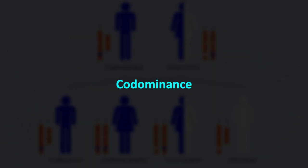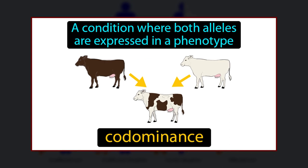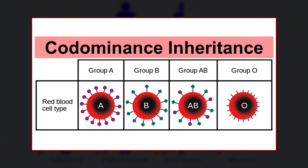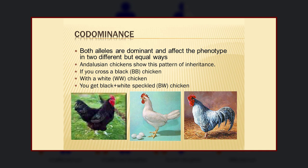Now, codominance. In an offspring of an organism, if we see traits from two alleles, then it is a result of codominance. Blood group in humans is a good example: someone with blood group AB expresses the alleles of both blood groups A and B, meaning both antigen A and B are present on the RBC membrane. Another example of codominance is in varieties of domestic fowl or chicken, where black and white feathers are codominant, and when fowls of both separate traits are bred, the offspring show both white and black feathers.